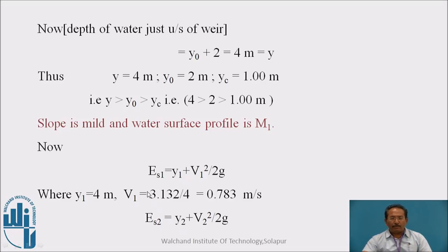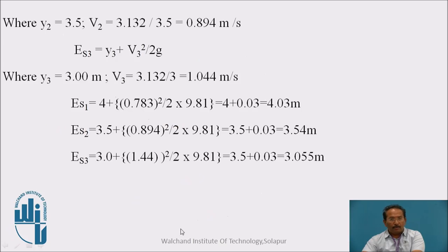Now what is the specific energy? Specific energy is y, the pressure head plus velocity head. Here we are not going to take the datum head. Specific energy is the addition of p by w that is y and kinetic head v squared upon 2g. Put these values, find out Es1. Similarly find out Es2. Here Es2 is y2 plus v2 squared upon 2g. Similarly find out Es3. So Es1, Es2, Es3 we have calculated as 4.03, 3.54 and 3.055 meters.